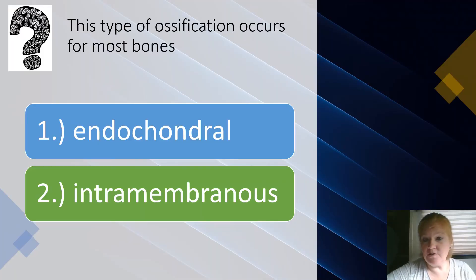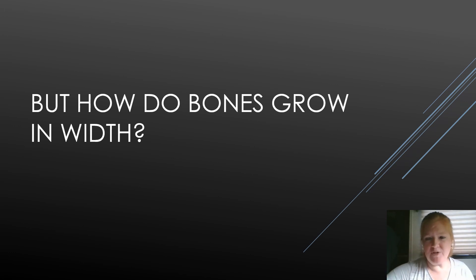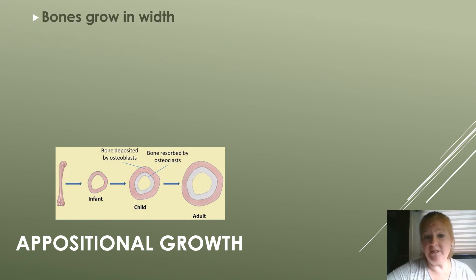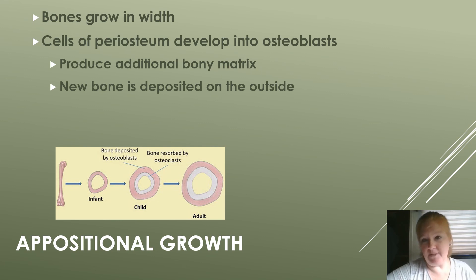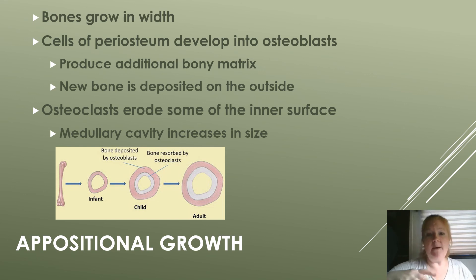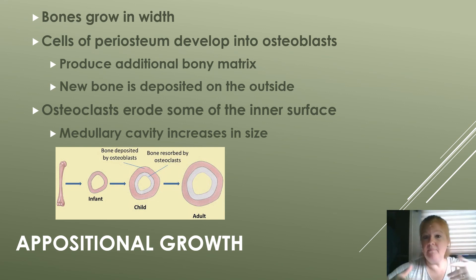This type of ossification — endochondral — occurs for most bones. But how do bones grow in width? That's a process called appositional growth. Cells of the periosteum develop into osteoblasts and produce additional bony matrix, depositing new bone on the outside. Then osteoclasts clear out some of the inner surface so bones don't get heavier and heavier — the medullary cavity increases in size. New bone is laid on the outside while the inside is cleared out, so bones don't become too heavy to move.